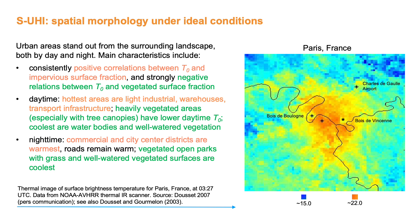Next, let's have a look at the surface temperature heat island. Although similarities exist, the situation here is slightly different. Considering surface temperatures, urban areas stand out from the surrounding landscape both by day and night. Shown here is a nighttime thermal image of Paris captured by the NOAA AVHRR sensor. The main characteristics of surface temperature heat islands include consistently positive correlations between surface temperature and impervious surface fraction, and strongly negative relations between surface temperature and vegetated surface fraction. Both of these features can also be seen on the thermal image to the right, where the two urban forests, Bois de Boulogne and Bois de Vincennes, show up as areas with relatively lower surface temperatures, and Charles de Gaulle Airport, with its expansive paved surfaces, has higher surface temperatures.